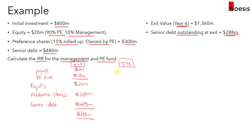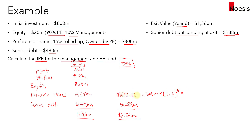Fast-forwarding to the exit period at T=6, the projected exit value is $1,360 million. Senior debt has been reduced to $288 million, repaid using operational cash flows. For preference shares, no dividends were paid during the period — everything compounds to exit: $300 million × (1.15)^6 = $693.92 million. The residual equity value is $1,360 million minus $288 million minus $693.92 million, which equals $378.08 million.